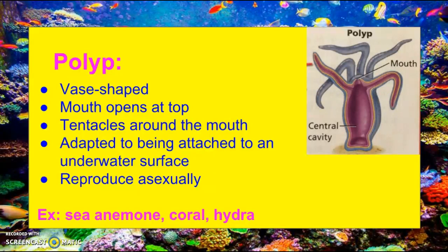Normally these reproduce asexually, and the way that it works is that a part of the animal starts to grow on the side and then pops off — that's called budding. Examples of polyp-shaped cnidarians are sea anemones, coral, and hydra.